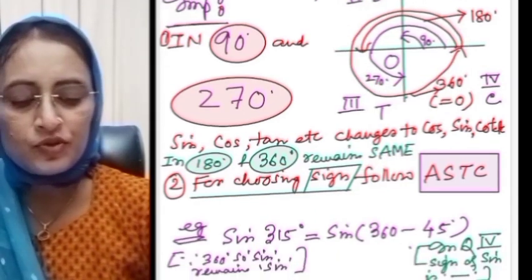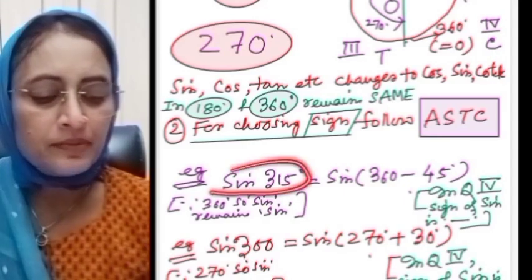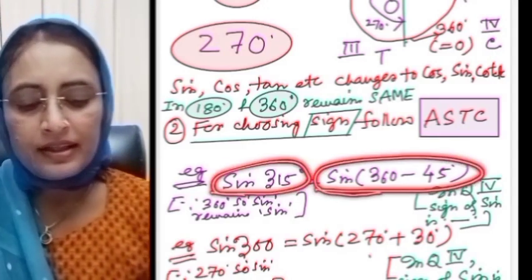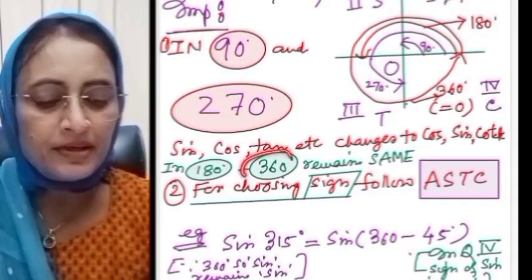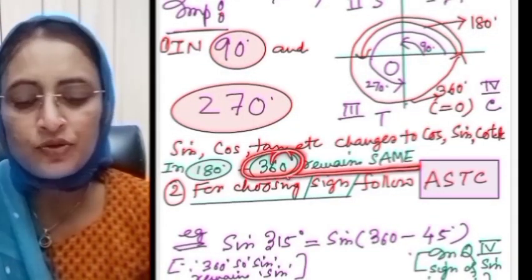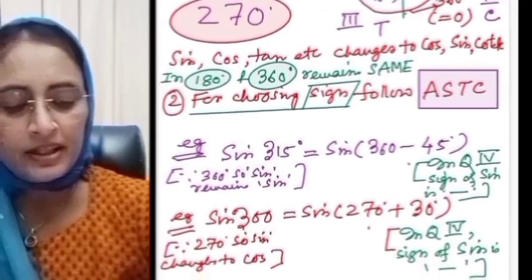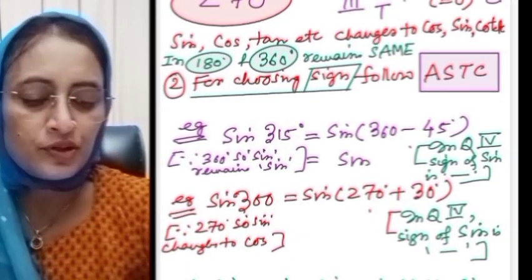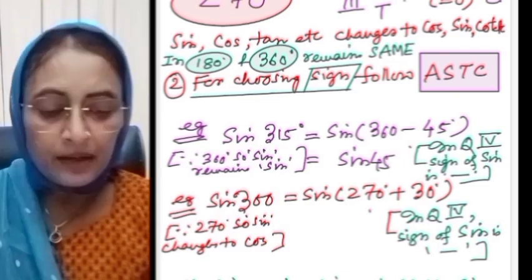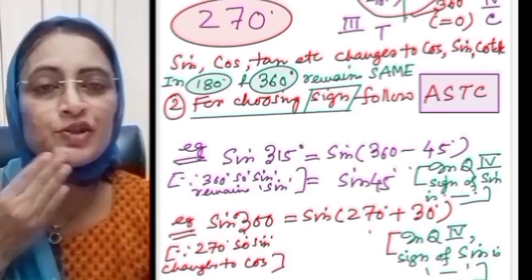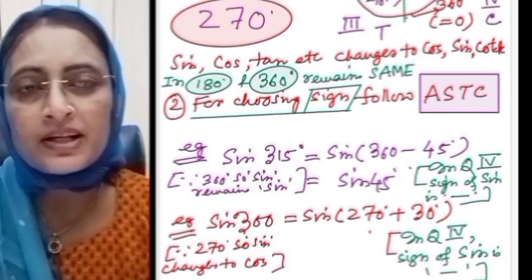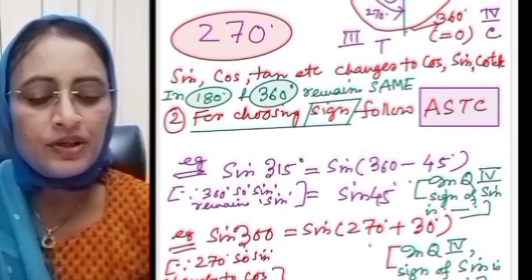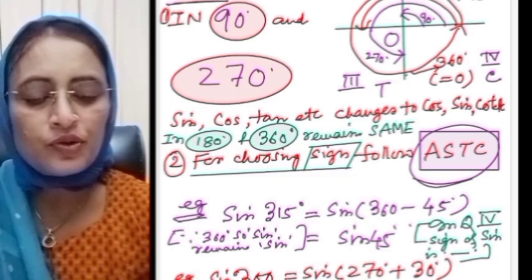For example: sin 315 = sin(360 − 45). Since 360 is an even multiple of 90, sin remains sin — so we write sin(−45) = −sin 45. Then using the ASTC rule, 315 degrees is in the fourth quadrant where only cos is positive, so sin is negative. Therefore sin 315 = −sin 45 = −1/√2.